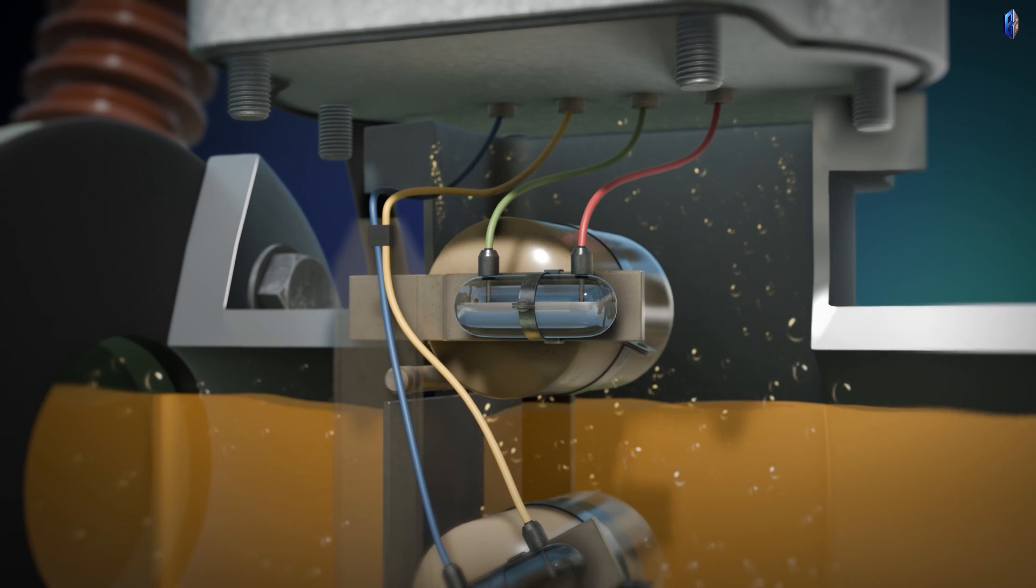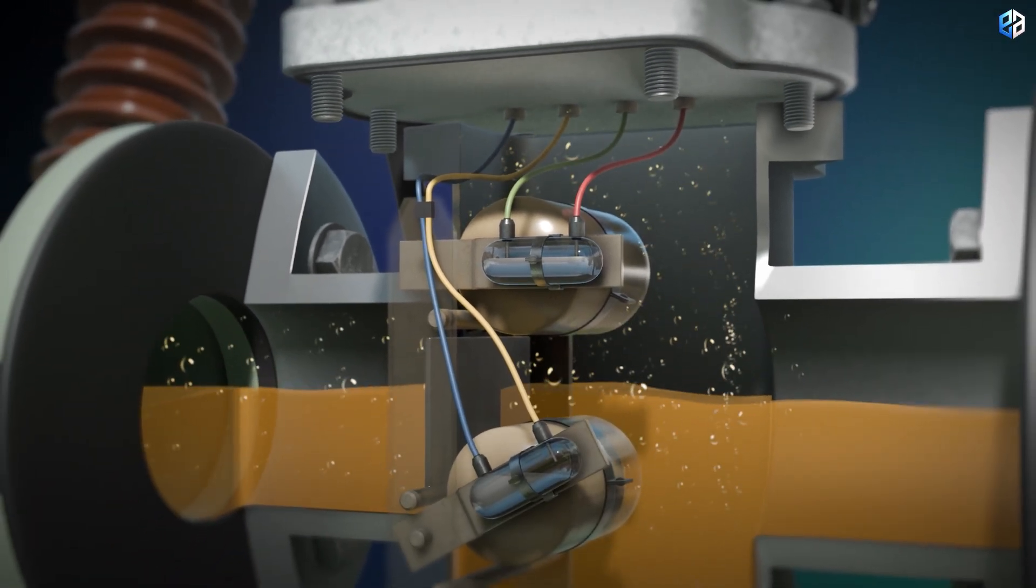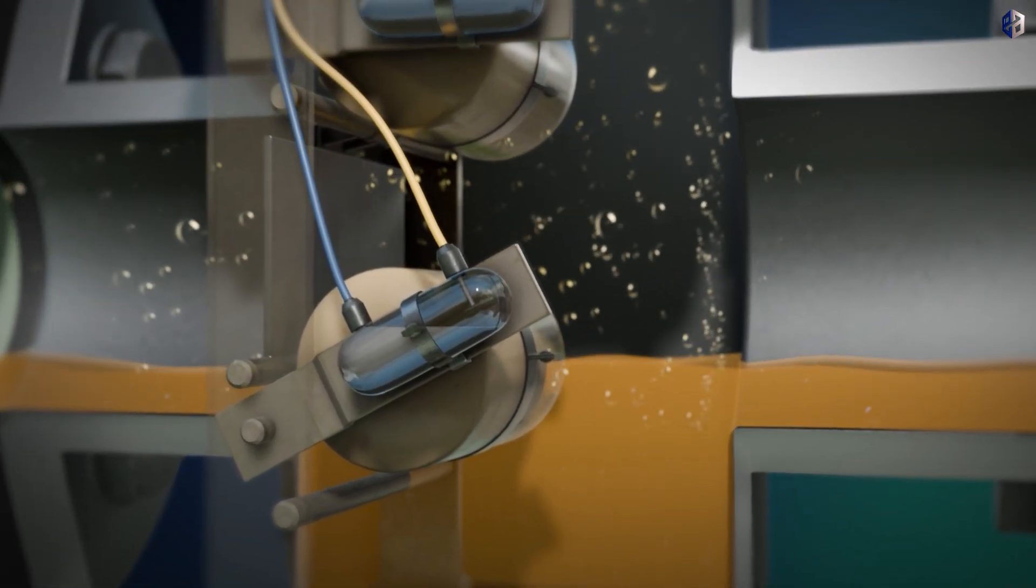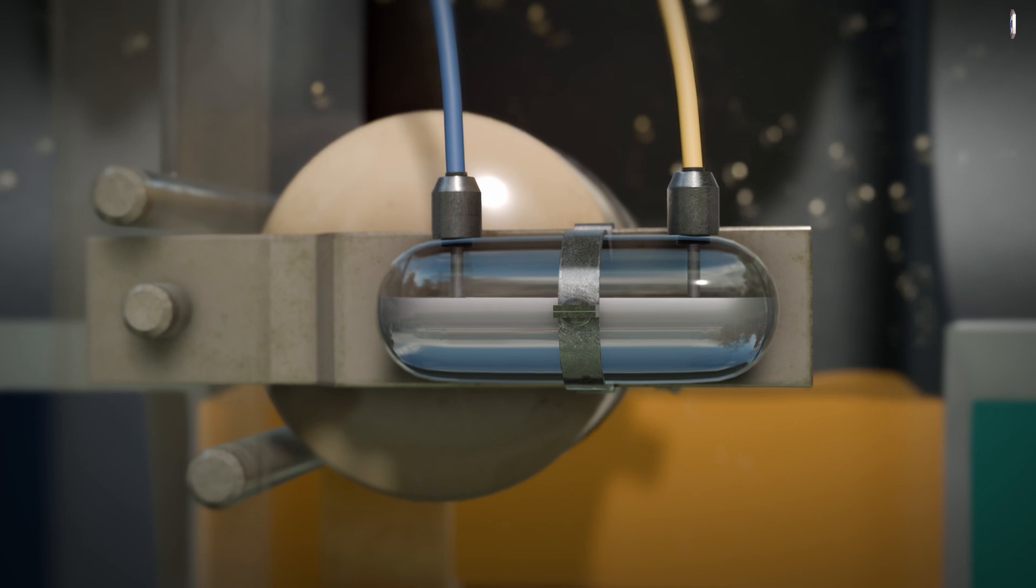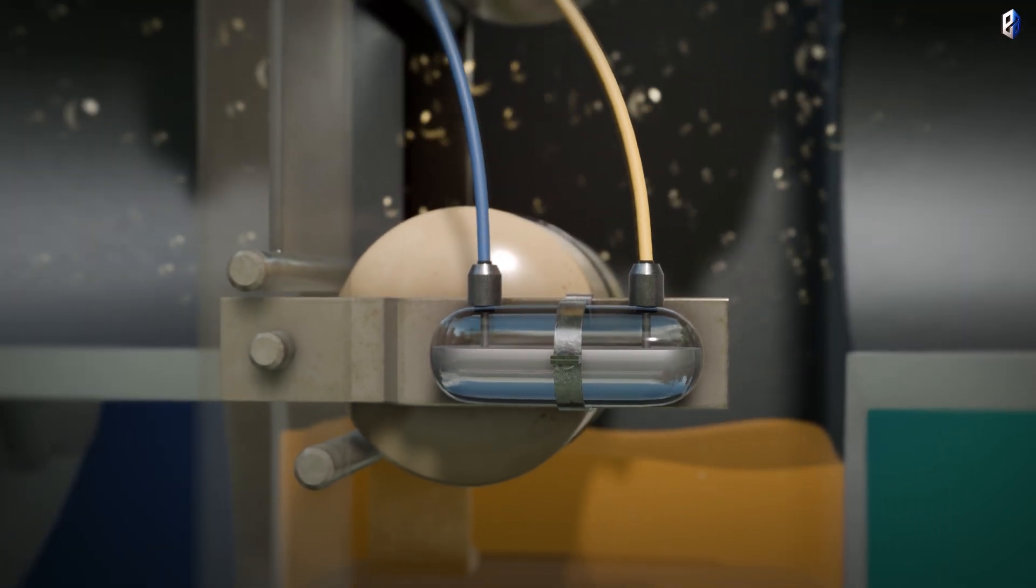If the oil level continues to drop, the second float is also lowered and its contact is actuated. This can then even be configured to trip the circuit breakers on the high and low voltage side in order to protect the transformer from further damage.